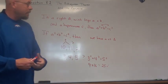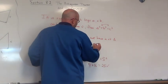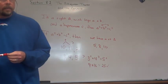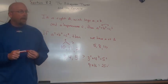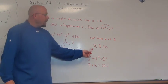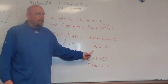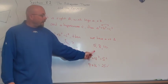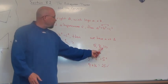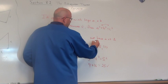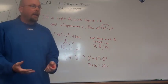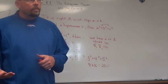Let's try 5, 8, 10. Is that a right triangle? First, is it a triangle? Five plus eight is 13, and 13 is bigger than 10, so it is a triangle. Then we check A squared plus B squared equals C squared: A squared is 25, B squared is 64, C squared is 100. Twenty-five plus 64 does not equal 100, so it's not a right triangle — it's a triangle, but not a right triangle.